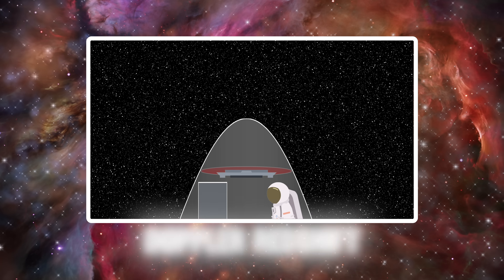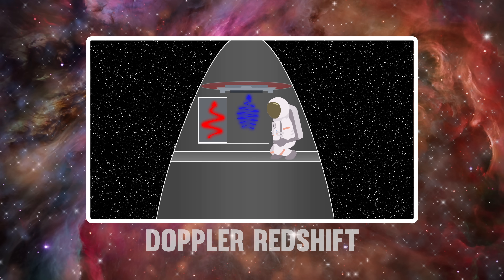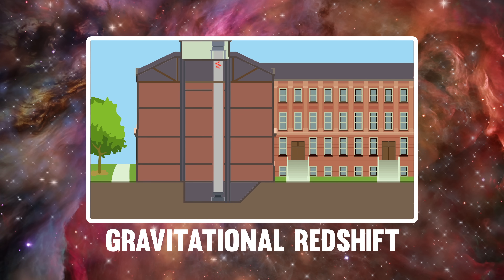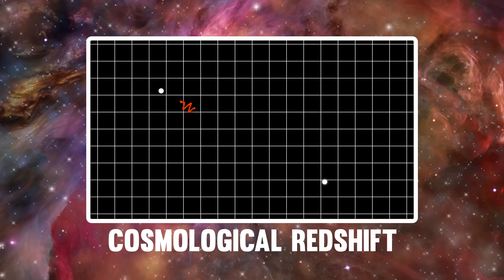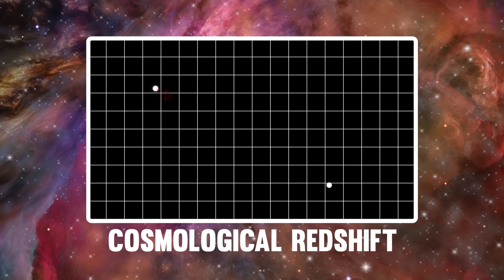And what about you? Are you expanding with the universe? To answer these questions, we've got to take a closer look at what it really means to redshift. Physicists actually talk about three different types of redshift: Doppler redshift, where observers moving relative to one another measure photons to have different wavelengths; gravitational redshift, where observers at different locations in a gravitational field measure different wavelengths; and cosmological redshift, where observers exchanging photons over vast cosmological distances in an expanding universe measure different wavelengths.